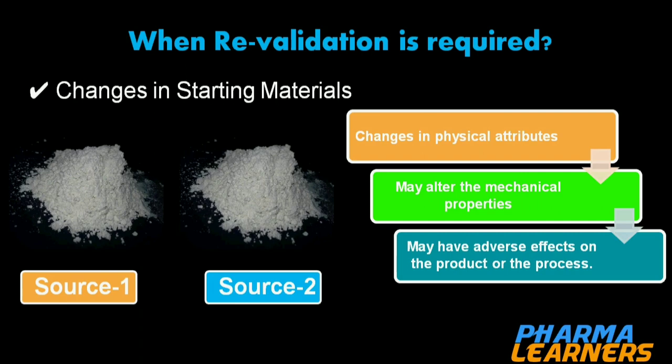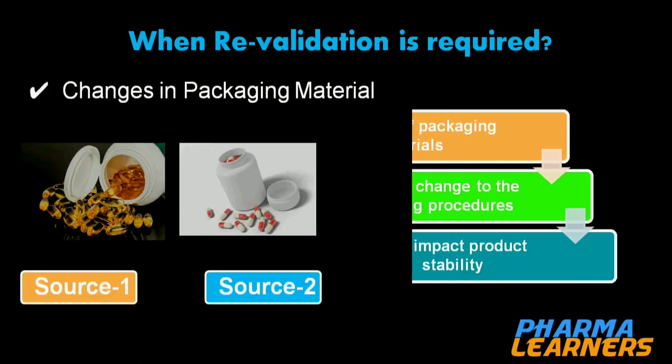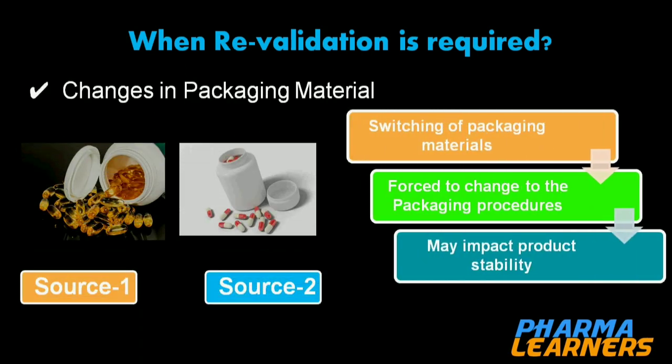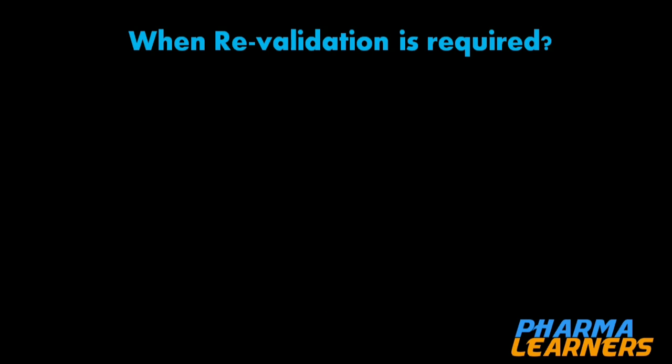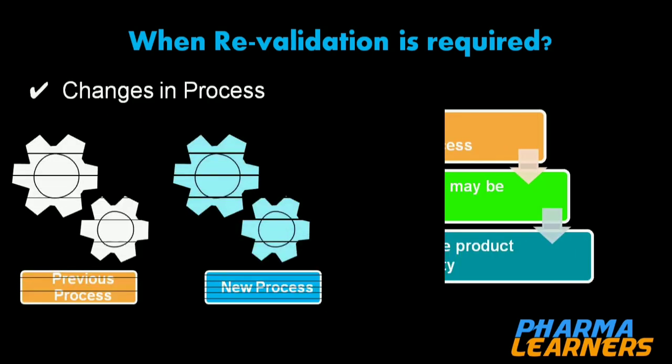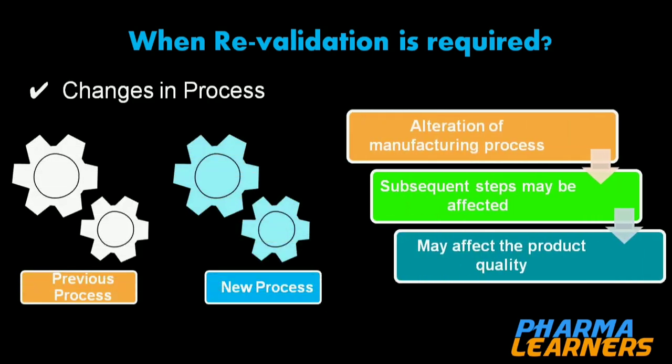The second example: change in packing material. If you switch the packing material, you may also be forced to make changes in the product procedure followed during packaging, which may impact product quality or product stability.